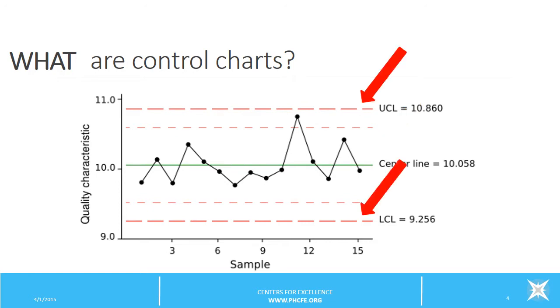And the heavy red dotted lines indicate both the upper and lower control limits, which again are typically calculated based on three standard deviations from the mean.